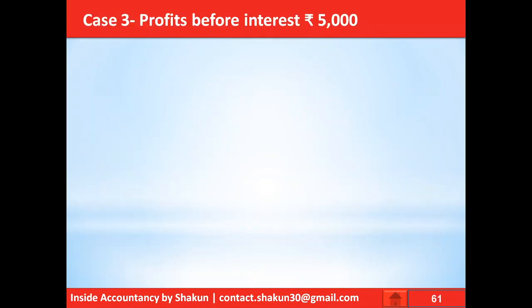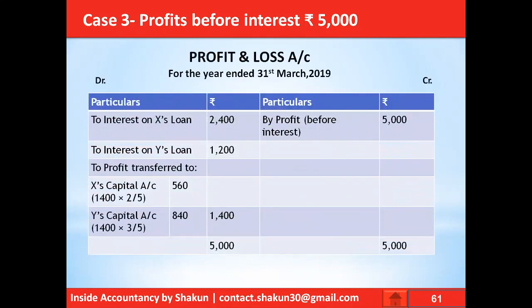In Case 3, profits before interest are 5,000. The profit amount has changed, but interest on loan continues to be shown on the debit side as a charge, resulting in a divisible profit of 1,400, which is divided between X and Y in the ratio of 2:3.